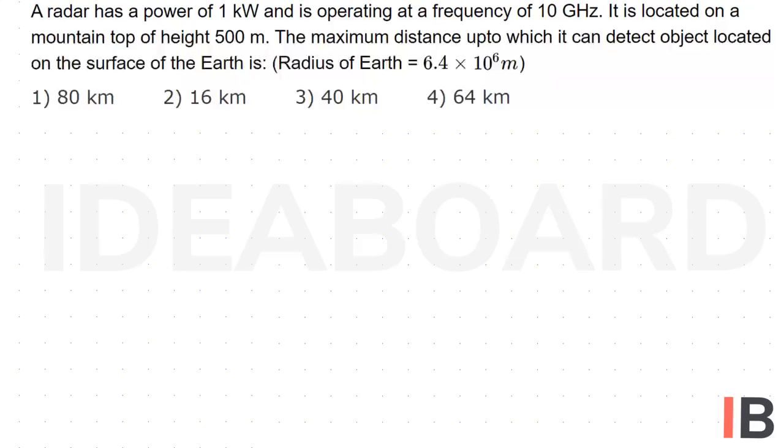So let us consider this is the earth. Now the point above the surface of the earth is H. The radius of the earth is R.